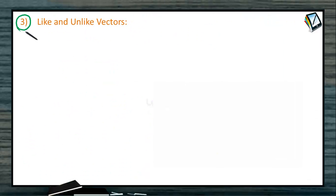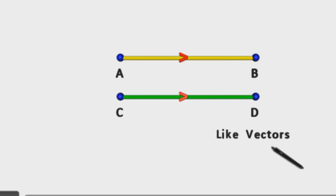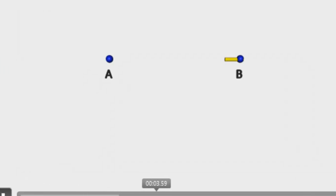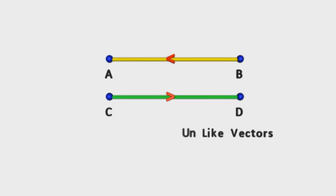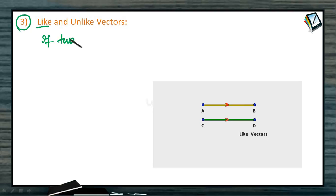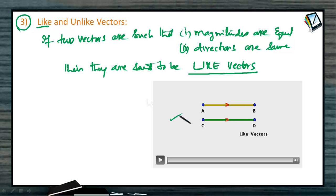Next, let us go to like and unlike vectors. Observe this animation: A is a point, B is another point, and AB bar is one vector and CD bar is another vector, having equal magnitude and the same direction. They are called like vectors. Next, if AB and CD have equal length but directions are reversed, they are called unlike vectors. So, two vectors are such that their magnitudes are equal and directions are same — then they are said to be like vectors. AB bar and CD bar are like vectors.